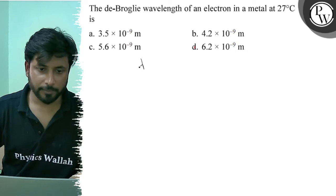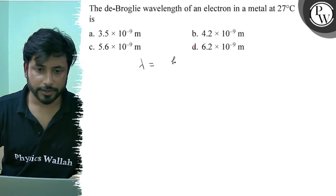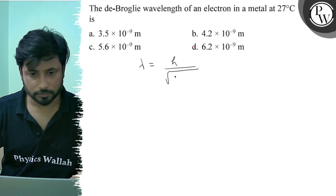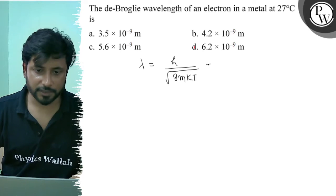Let's take a look at lambda. Lambda equals H upon root under 3mkT. Now, let's put all the values in it.